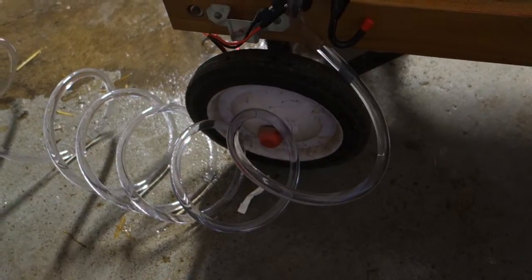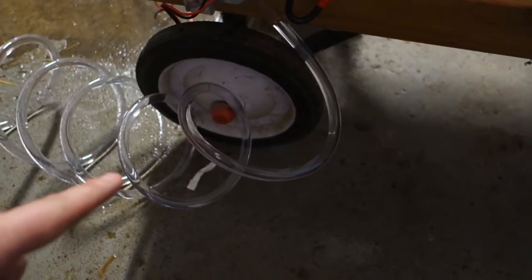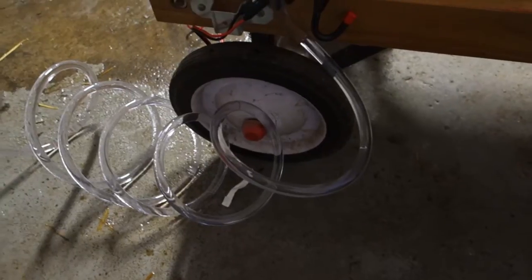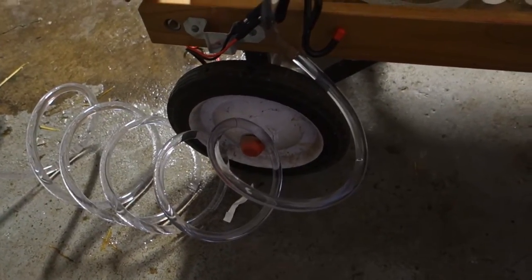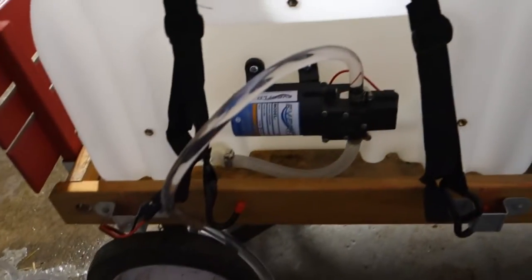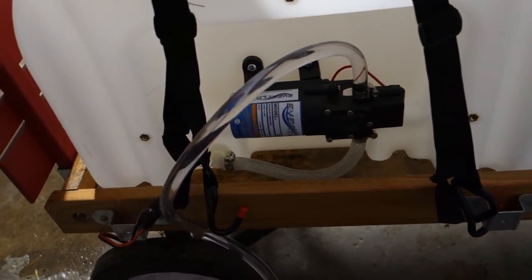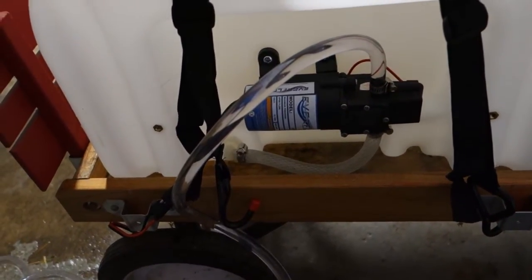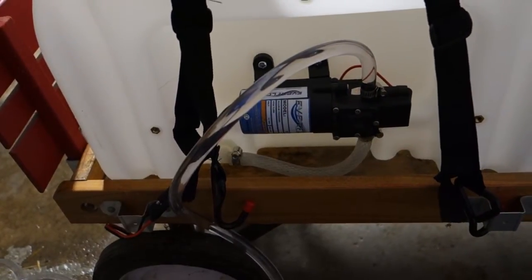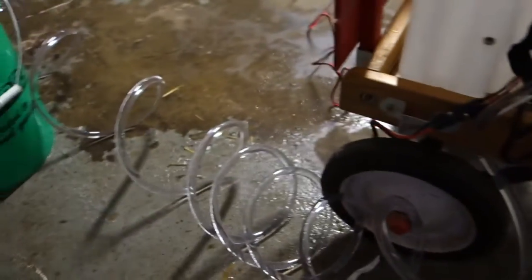So I went to Home Depot and got some three eighth inch inside diameter vinyl tubing. And this is good to 50 PSI at 80 degrees. Well within the limit because we don't really spray when it's really hot. We spray usually in the morning or in the spring, in the fall when it's cooler outside. But yeah, it's 20 feet.